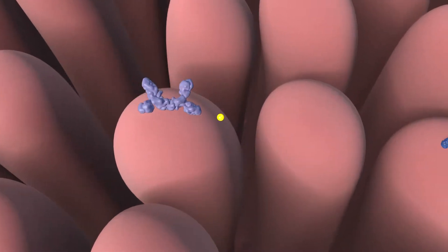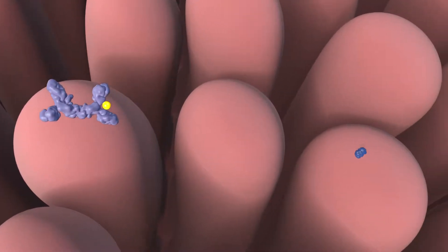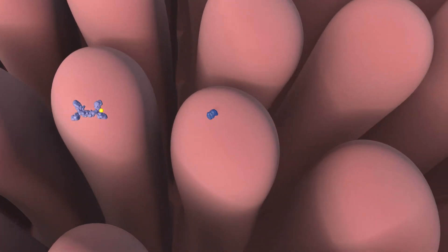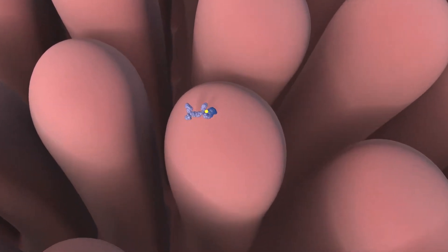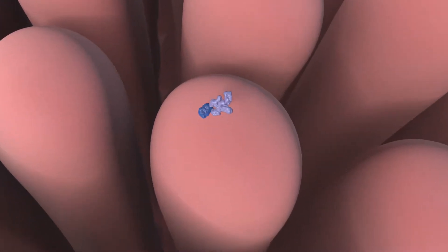One starts with secretory IgA picking up gliadin and bringing it to transferrin receptors on the surface of cells. The gliadin is then transcytosed into the lamina propria.